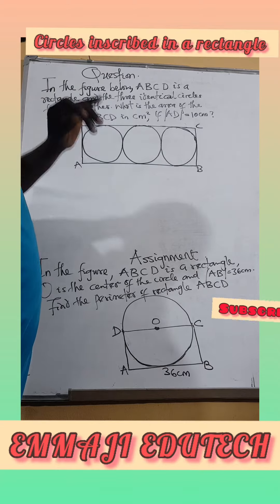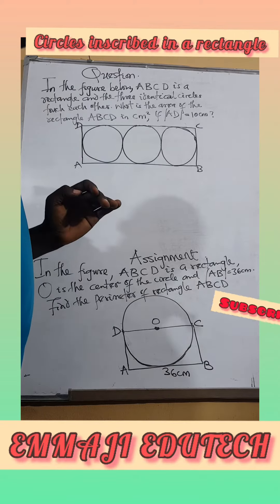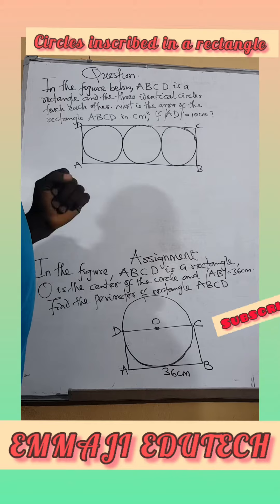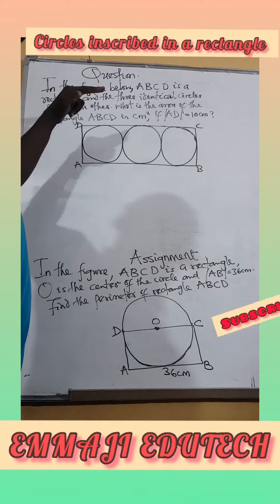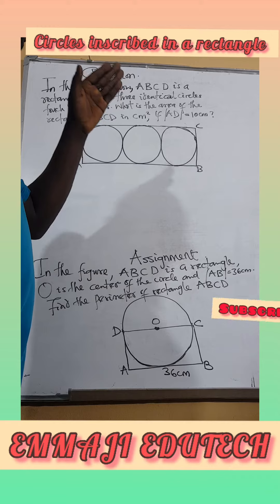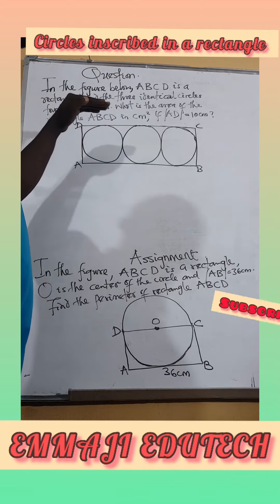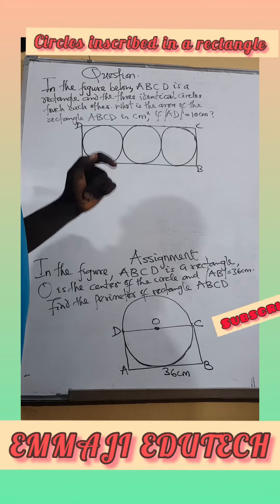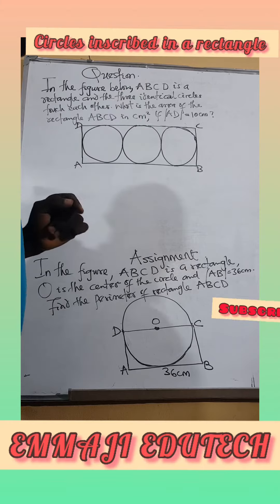Someone says, in the figure below, ABCD is a rectangle and the three identical circles touch each other. What is the area of this rectangle ABCD in centimeters squared if AD is 10cm?